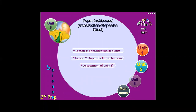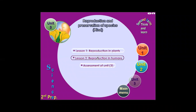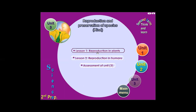We will study two lessons in this unit. Lesson 1: reproduction in plants. Lesson 2: reproduction in humans. Let's start Lesson 1, reproduction in plants.